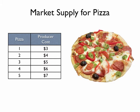Let's shift gears and look at the supply side for pizza. What we've done here is interview five different pizza restaurants and asked them what their cost for pizza would be. The first restaurant indicated a cost of $3.00, the second $4.00, then $5.00, $6.00, and $7.00. We can take that data and put it on a graph.